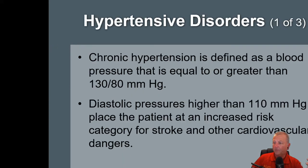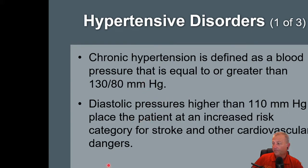Let's talk about the blood pressure thing — chronic hypertension, defined as 130 over 80. If your diastolic pressure is higher than 110 millimeters of mercury, the patient has an increased chance of stroke.